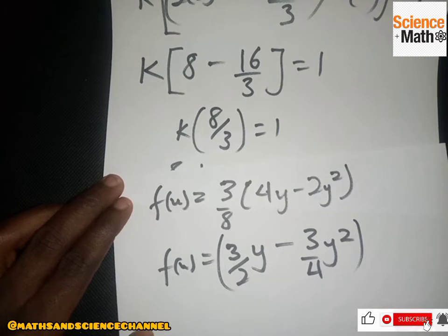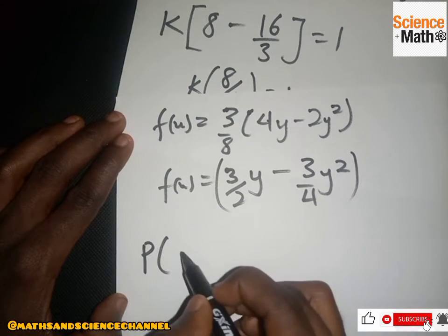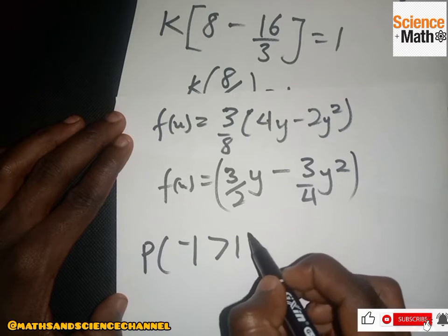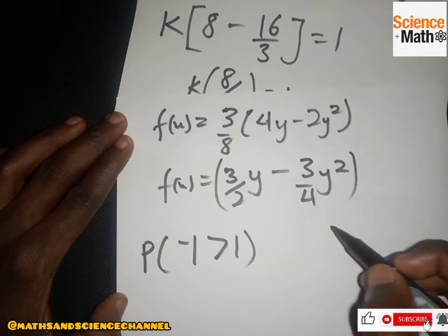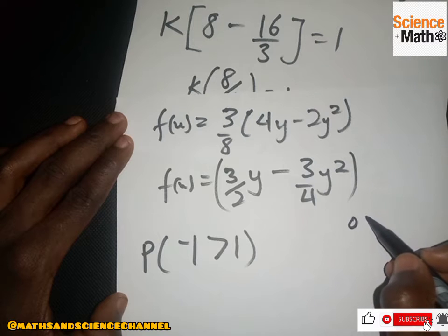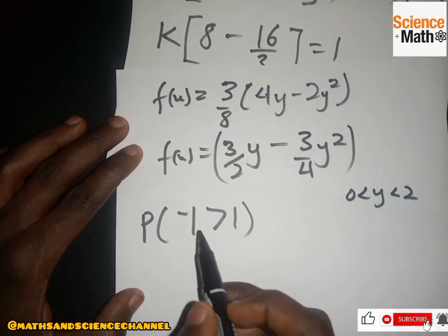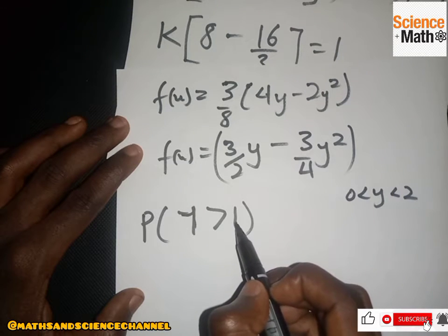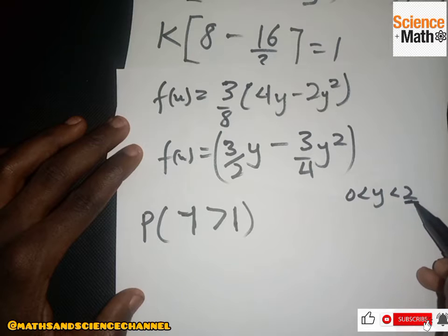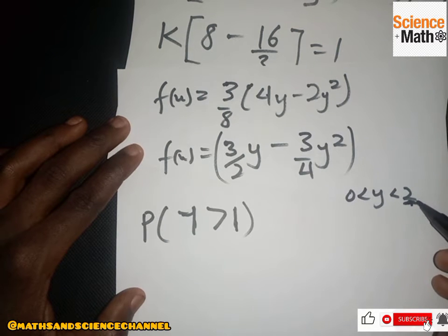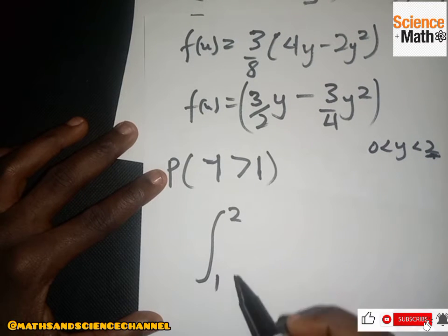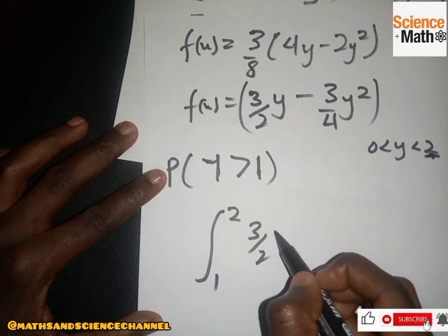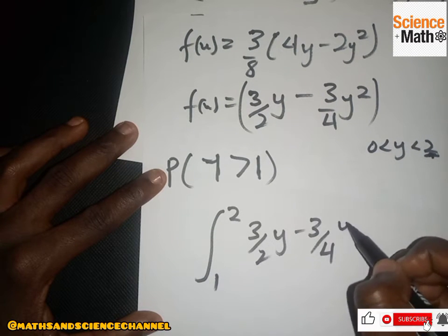For the next question, we find the probability that y is greater than one. From the piecewise function, the condition is 0 < y < 2. Since y is greater than one, our lower limit becomes one and our upper limit becomes two. So we evaluate the integral from 1 to 2 of [(3/2)y - (3/4)y²] dy.